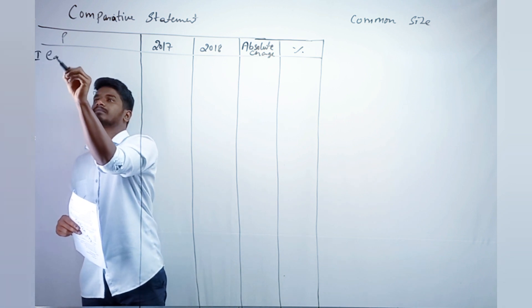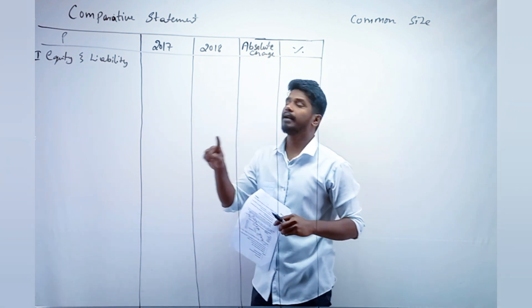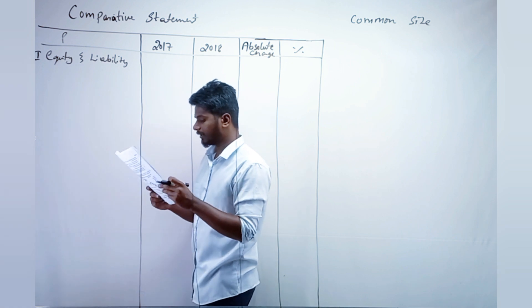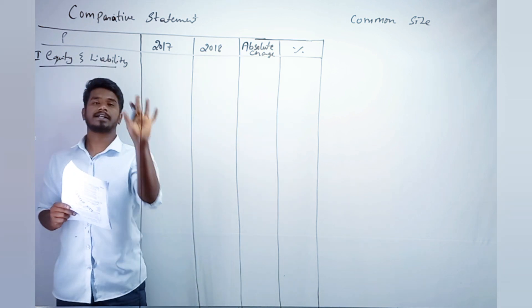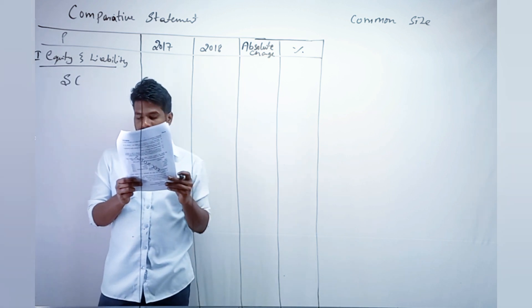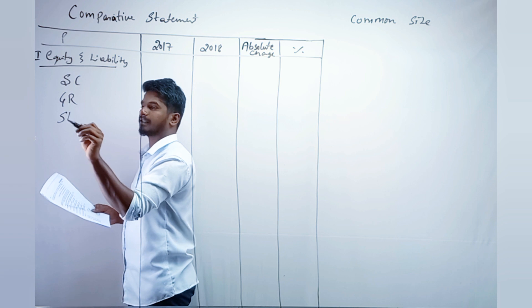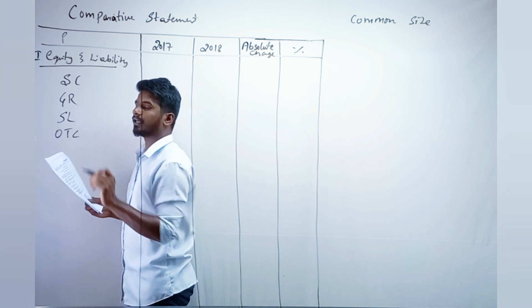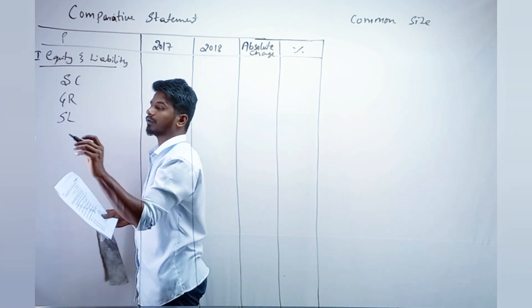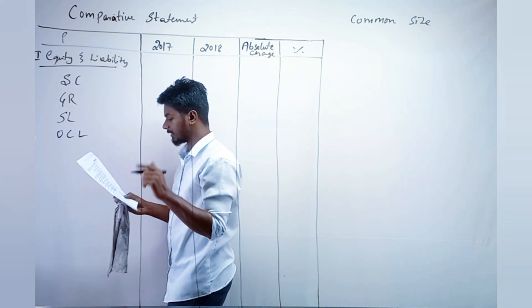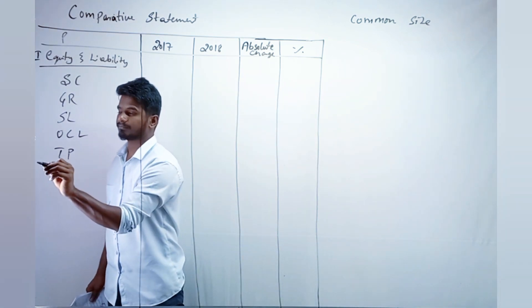First write 'Equity and Liabilities' and under that list all the liabilities. Share capital (SC), general reserve (GR), secured loans (SL), other current liabilities (OCL), and trade payable. Write it in full in the exam — I'm using short format here. Then make a total at the bottom of the liabilities section.